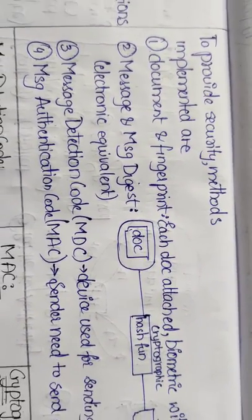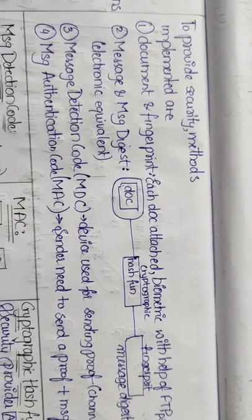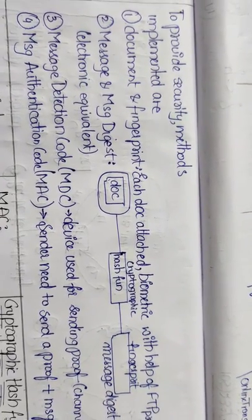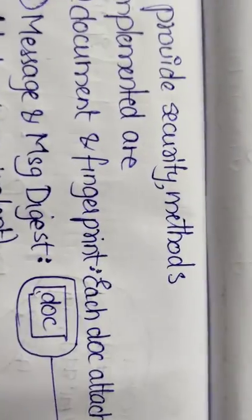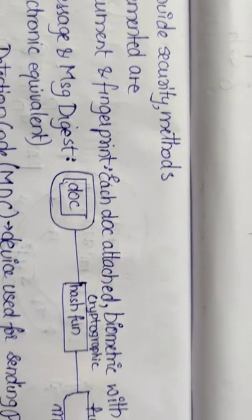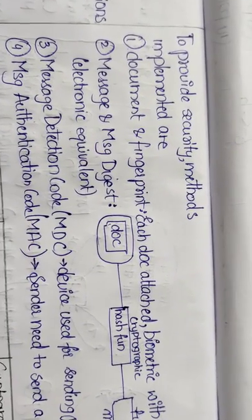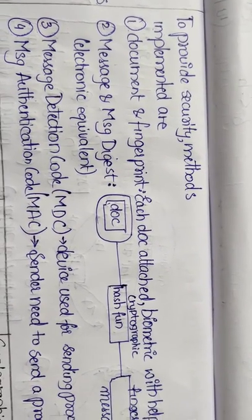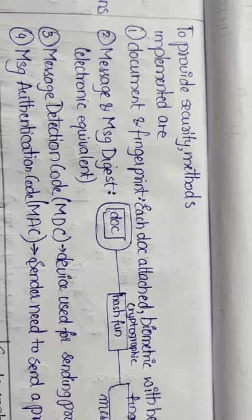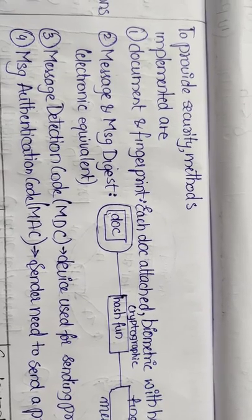Moving to provide security methods, there are four security methods. First is Document and Fingerprint. Each document is attached with some Fingerprint, so by using Biometric they can access the document.